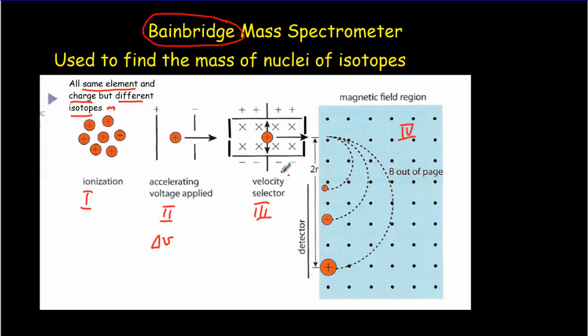However, when they come into this velocity selector region or speed selector region, which consists of crossed electric and magnetic fields, what happens is that if the particles are either going too fast or too slow, they'll miss the opening on the other side. So they have to be going at exactly the right speed to make it through into this fourth region. In this region here, we're just nailing down that speed, so it's essentially at a constant value. And then in the last region, the magnetic fields will separate the different isotopes.